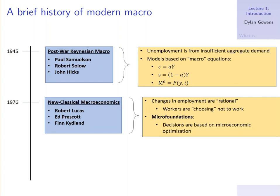These models are going to be built from the ground up — from first principles of consumers and firms making optimal choices under constraints, much like what you might see in microeconomics. So decisions are not just going to be ad hoc, like this consumption function which just says I consume some arbitrary fraction alpha of my income. My choice of consumption is going to be determined by a maximization problem.